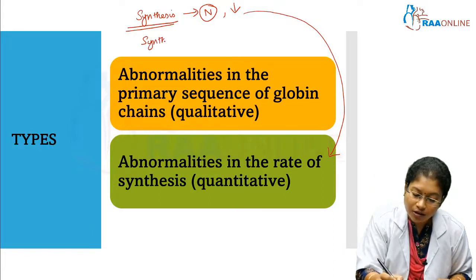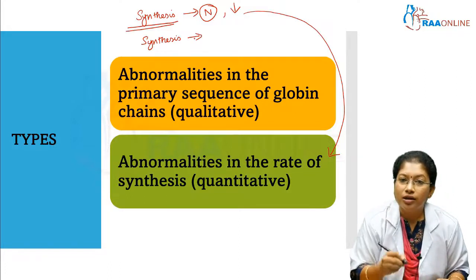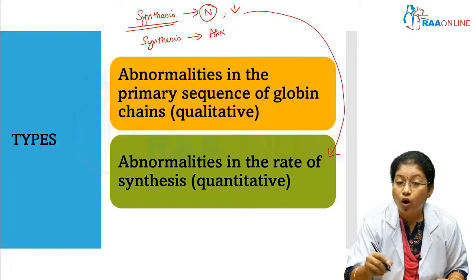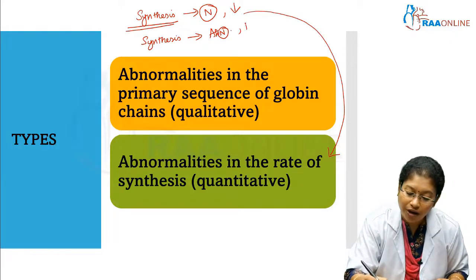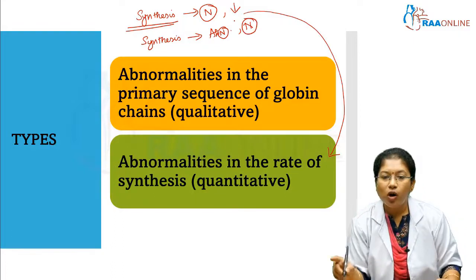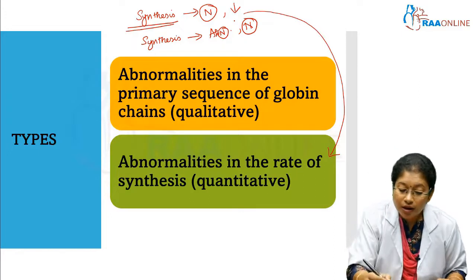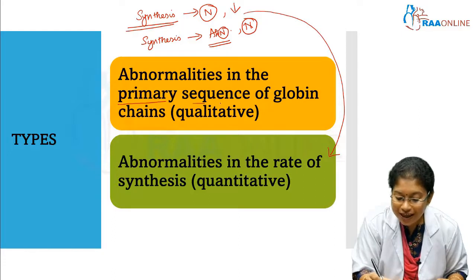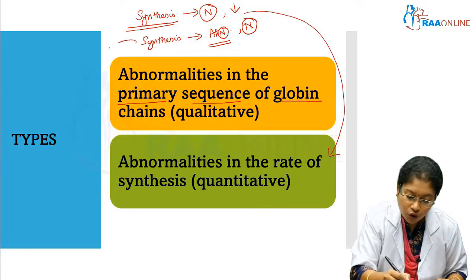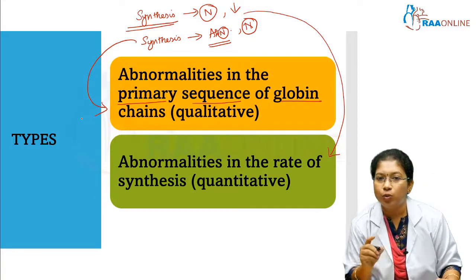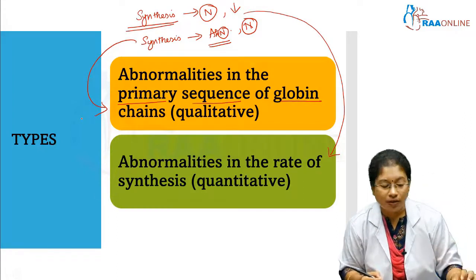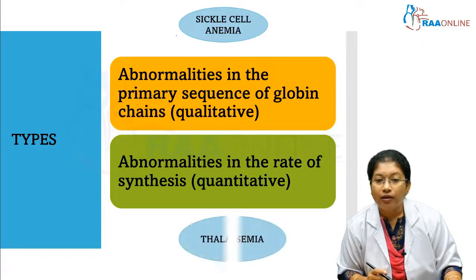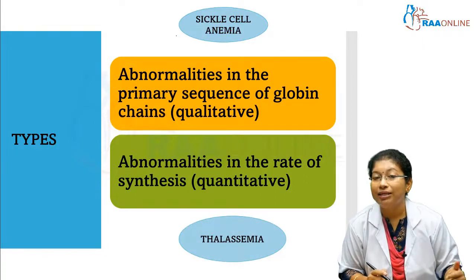Whereas when synthesis itself is abnormal but there is no compromise in quantity — normal quantity is produced but it is structurally abnormal — it affects the primary sequence of globin chain. That is called qualitative hemoglobinopathy. The example of qualitative hemoglobinopathy is sickle cell anemia, and the quantitative hemoglobinopathy example is thalassemia.